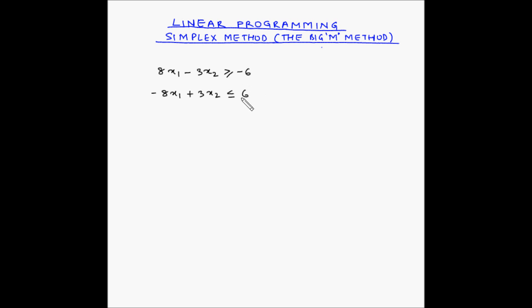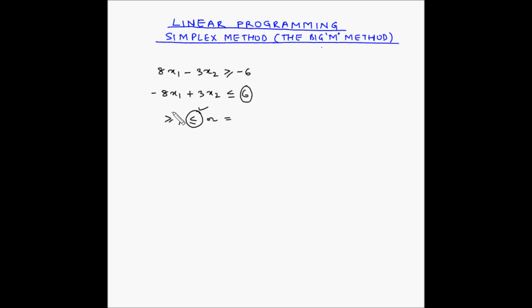Once the right-hand side is positive, the form of inequalities in the constraints can be either greater than or equal to, less than or equal to, or simply equal to. We have already seen how to solve examples when the inequality sign is less than or equal to. In this video, we will look at the steps to solve linear programming problems where the inequality sign is either greater than or equal to, or simply equal to.